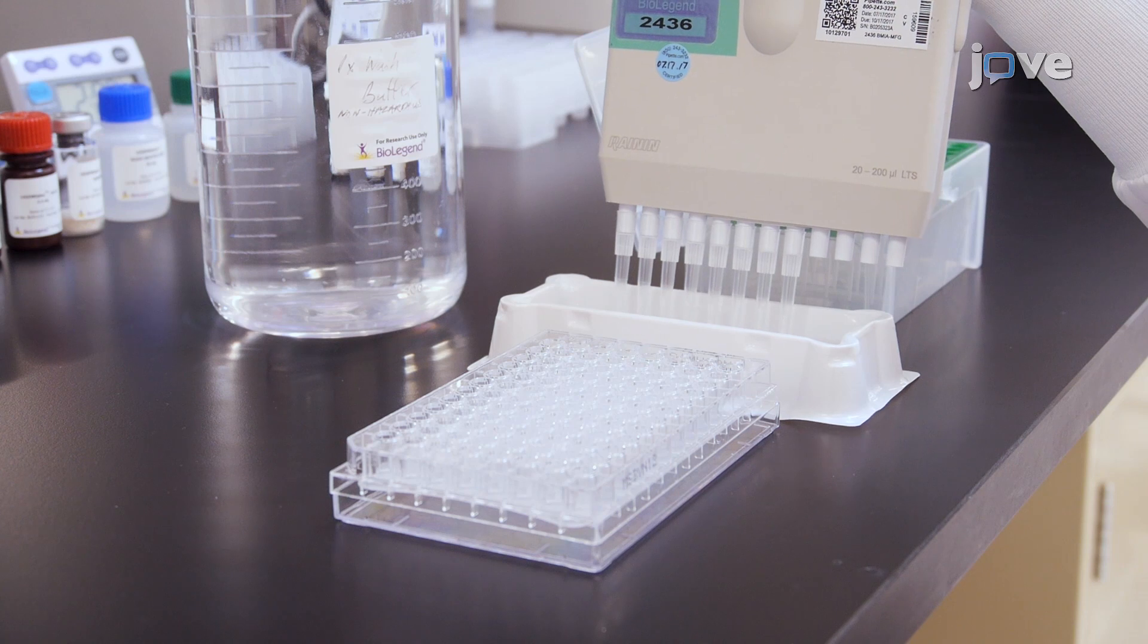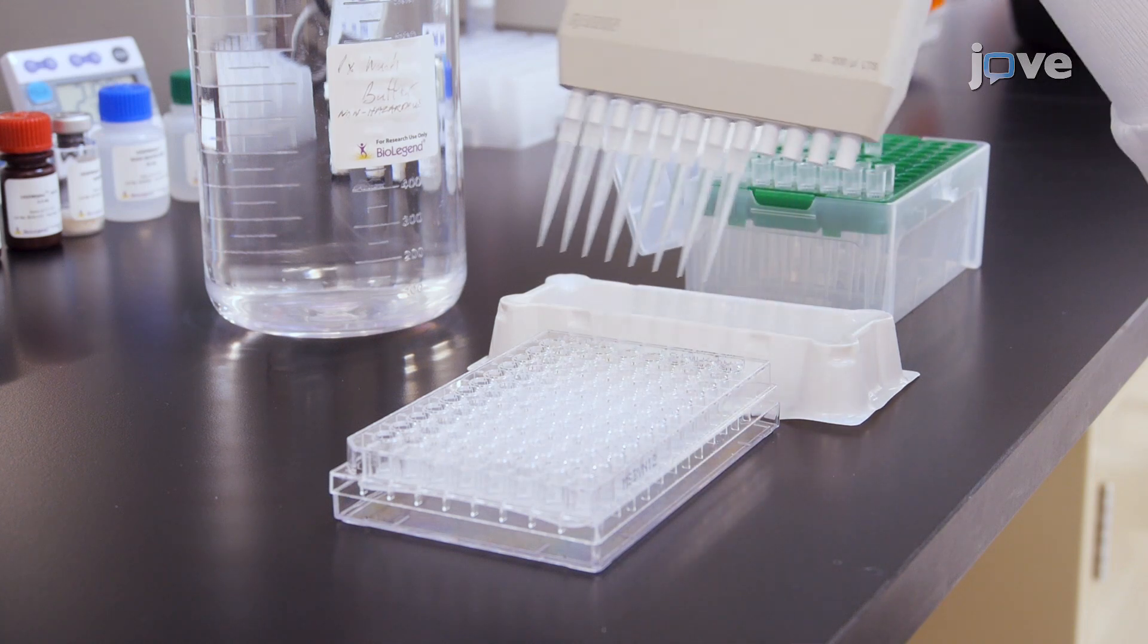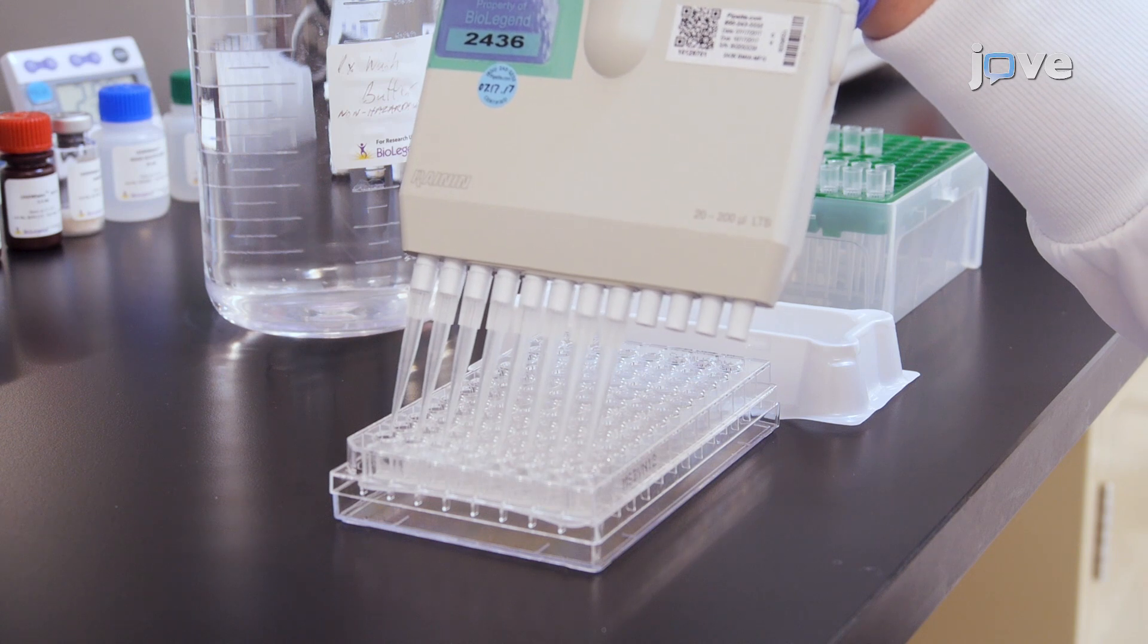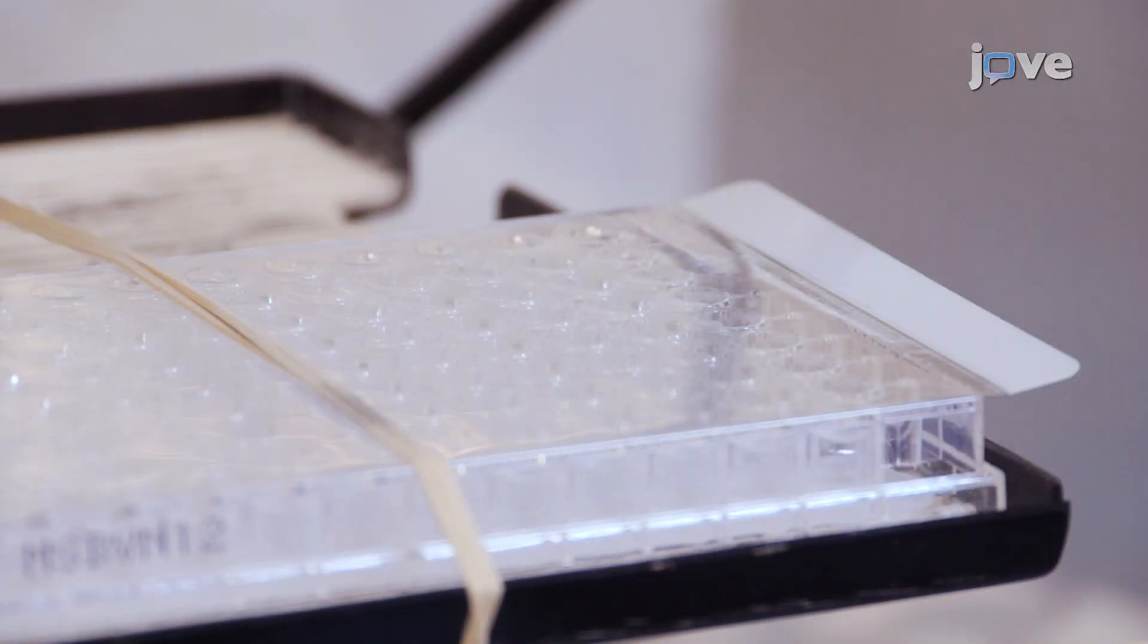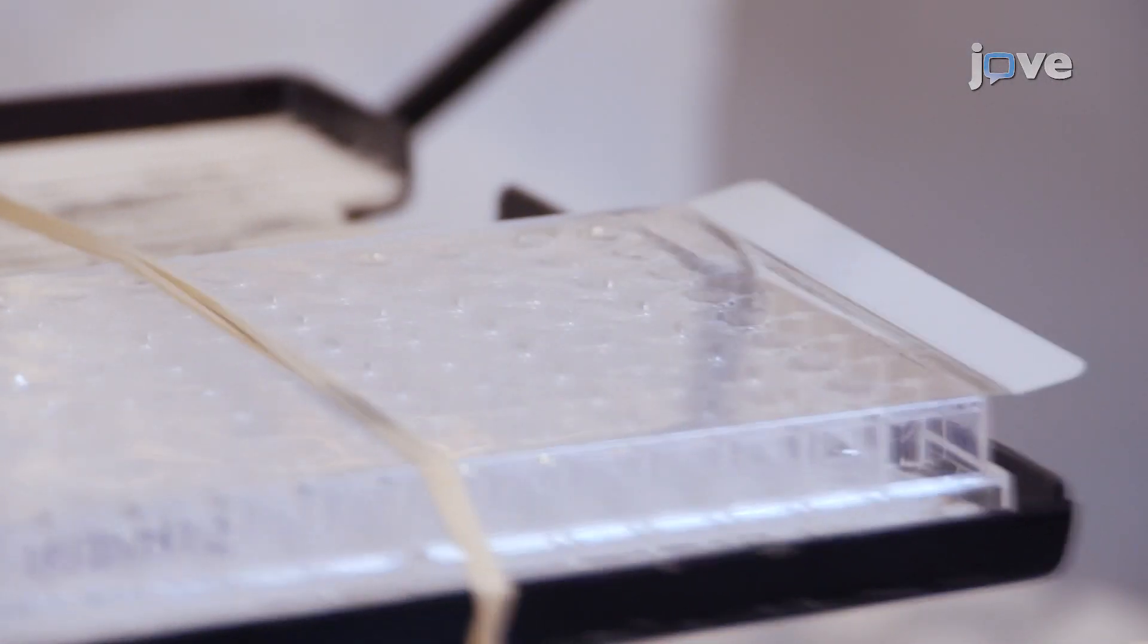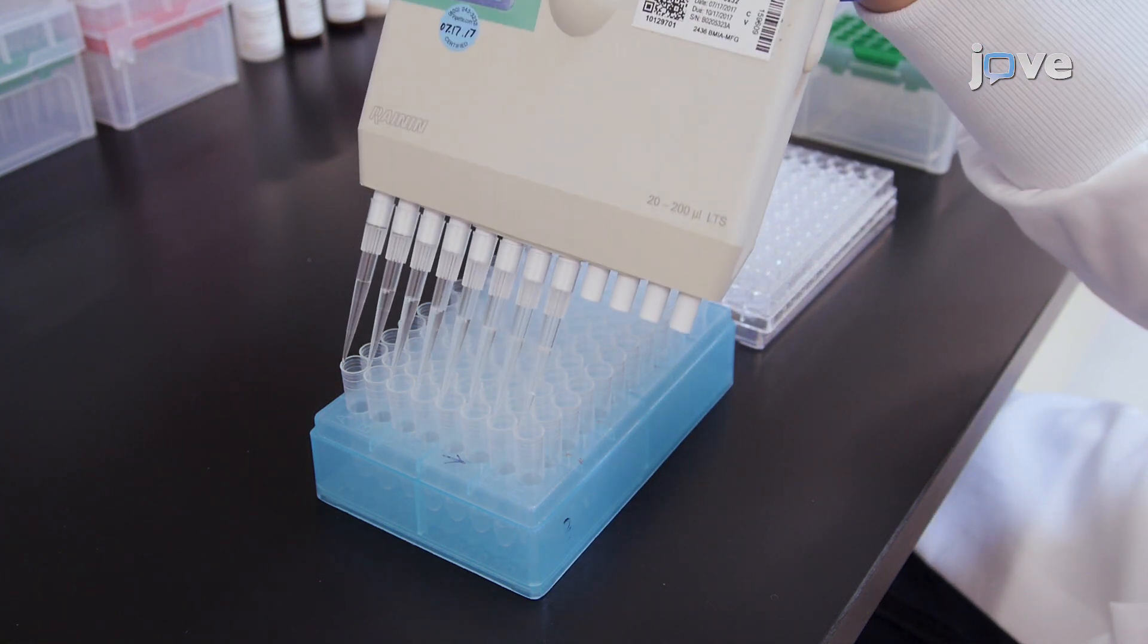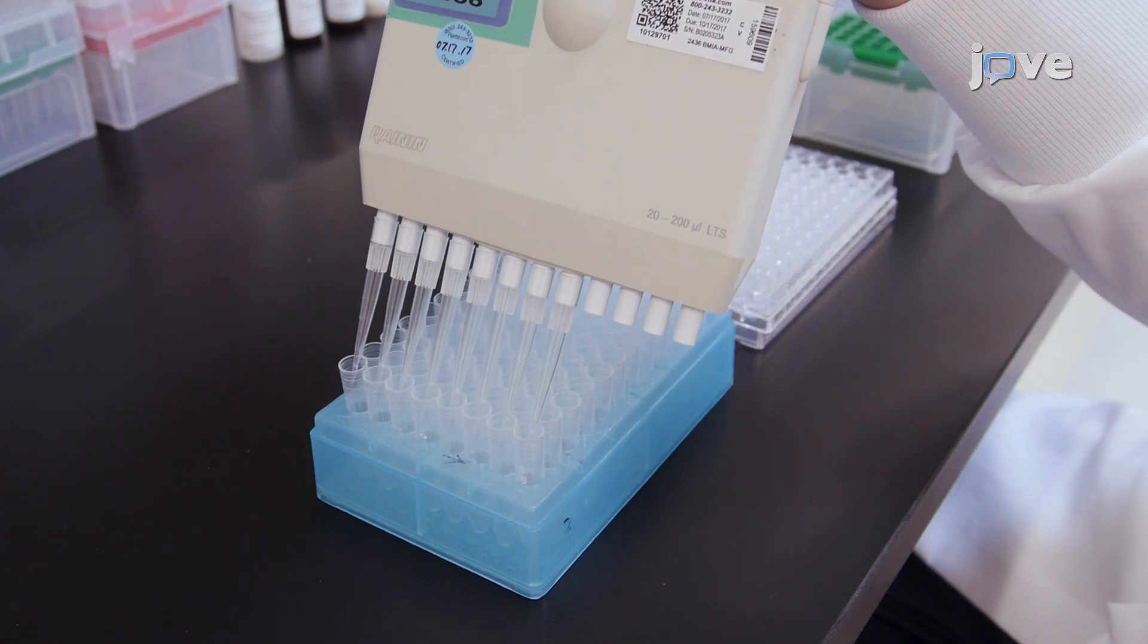After repeating the vacuum filtration step twice, add 200 microliters of 1x wash buffer to each well. Resuspend the beads on a plate shaker for 1 minute. Using a multi-channel pipette, transfer the samples from the filter plate to FACS tubes in order to read the samples on a flow cytometer.